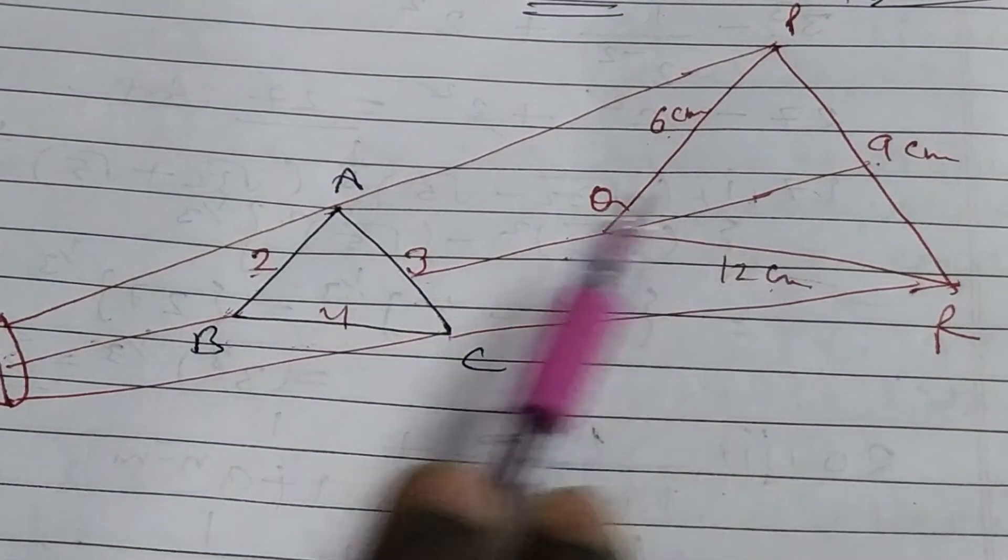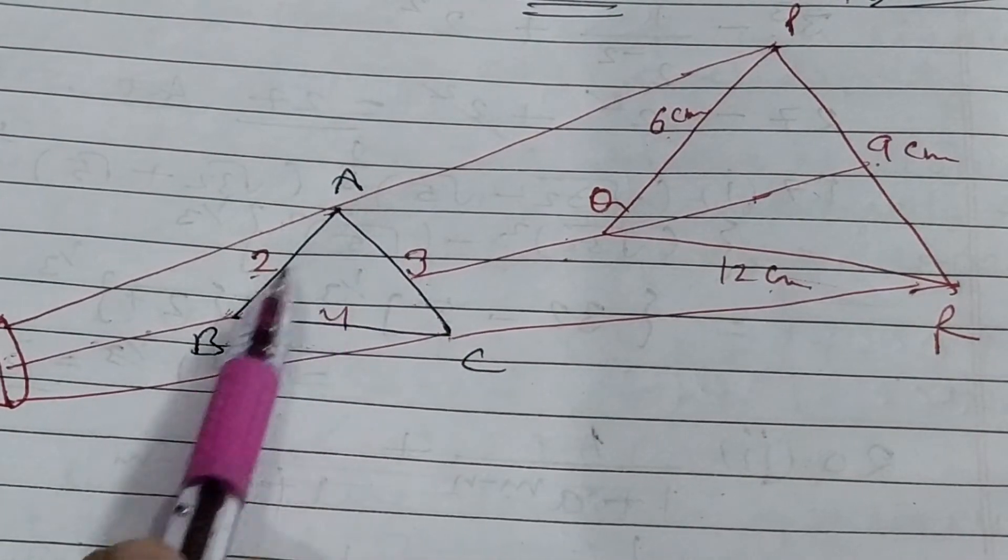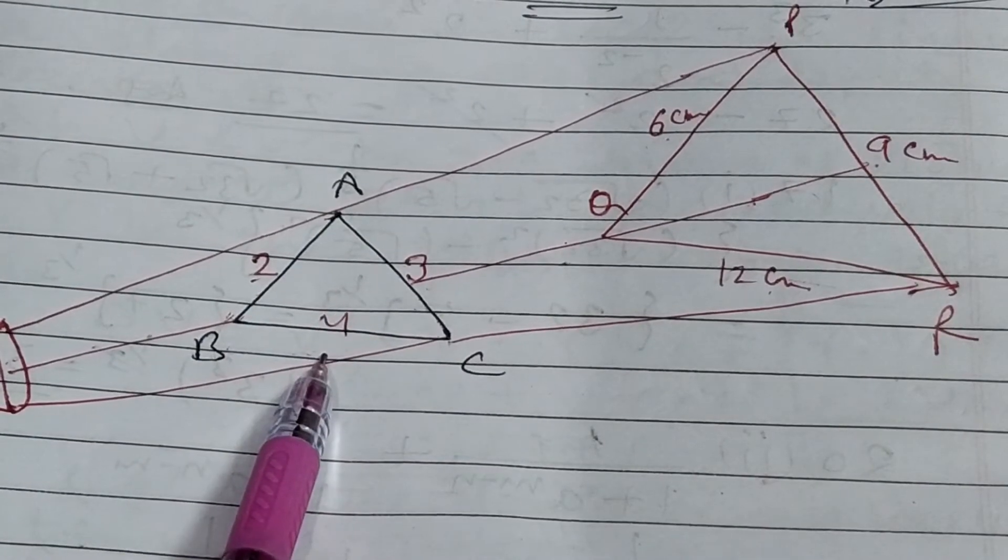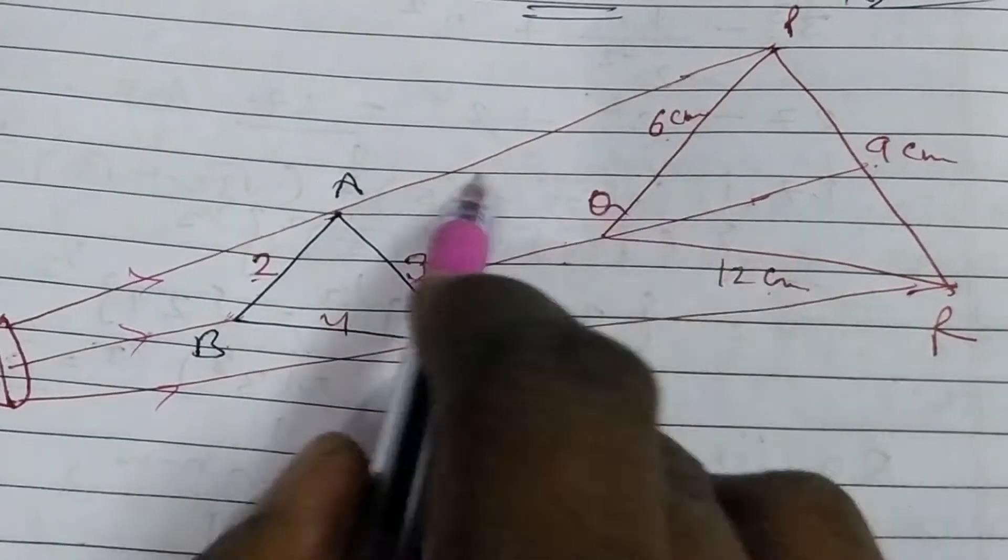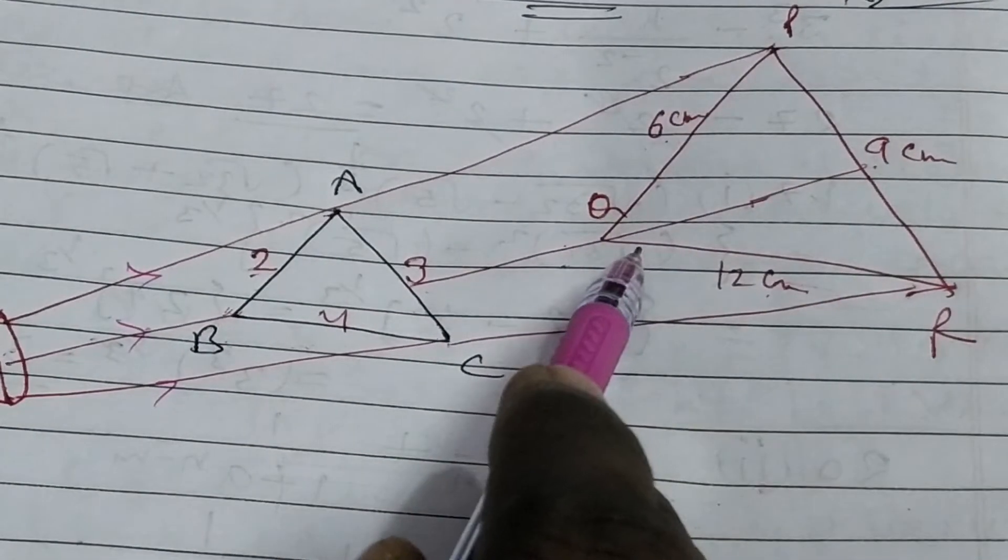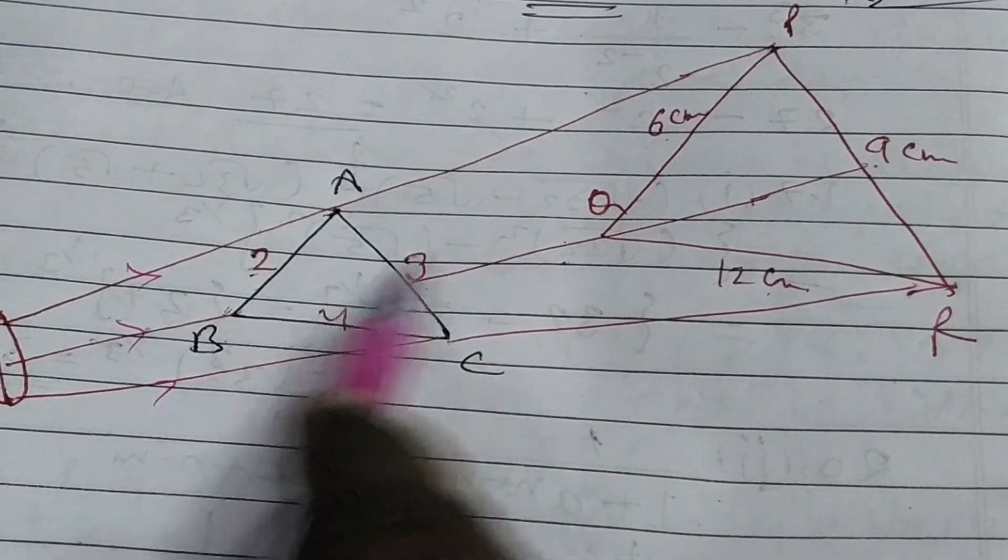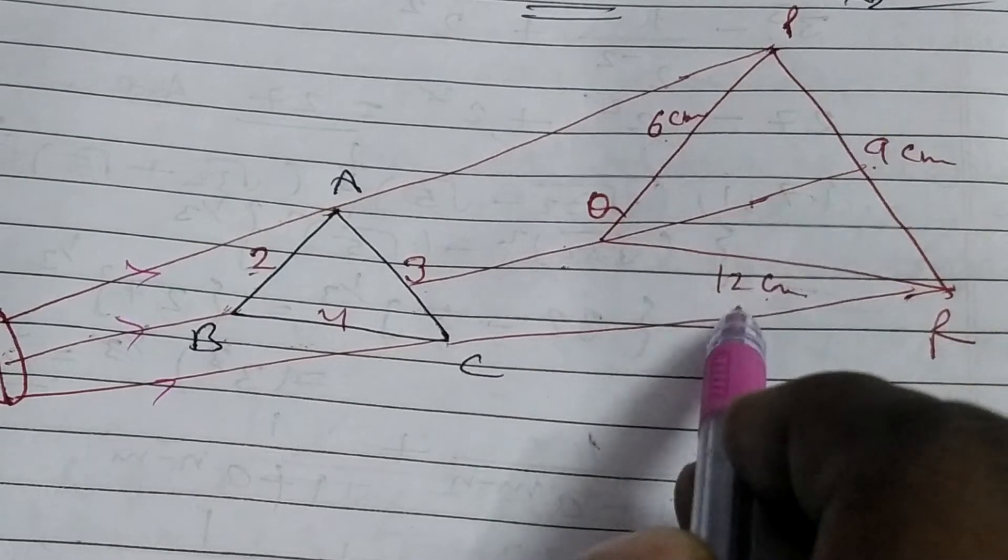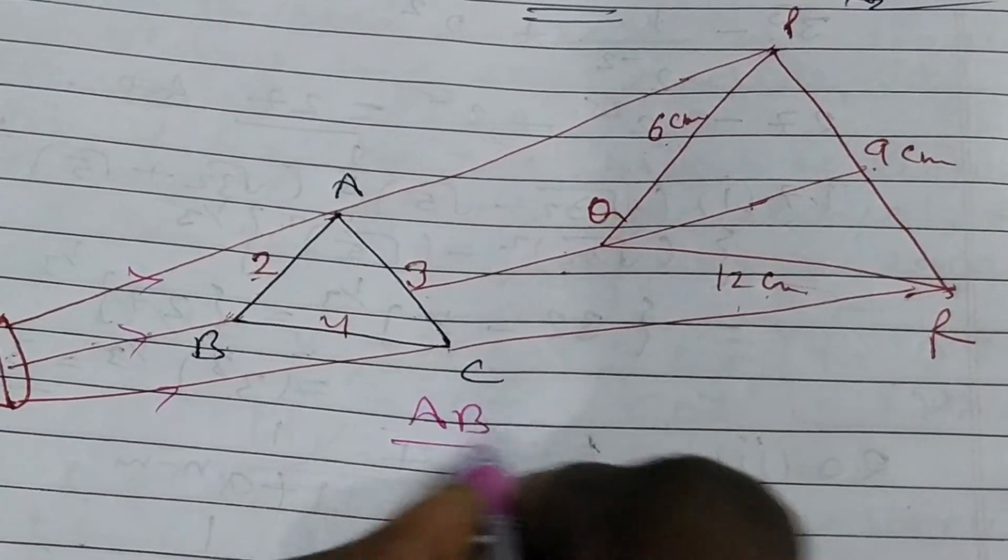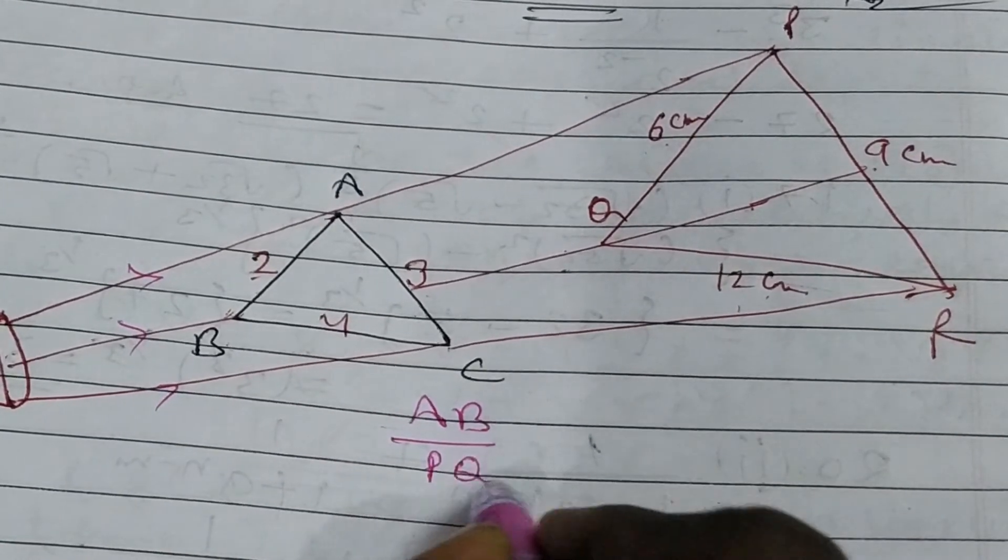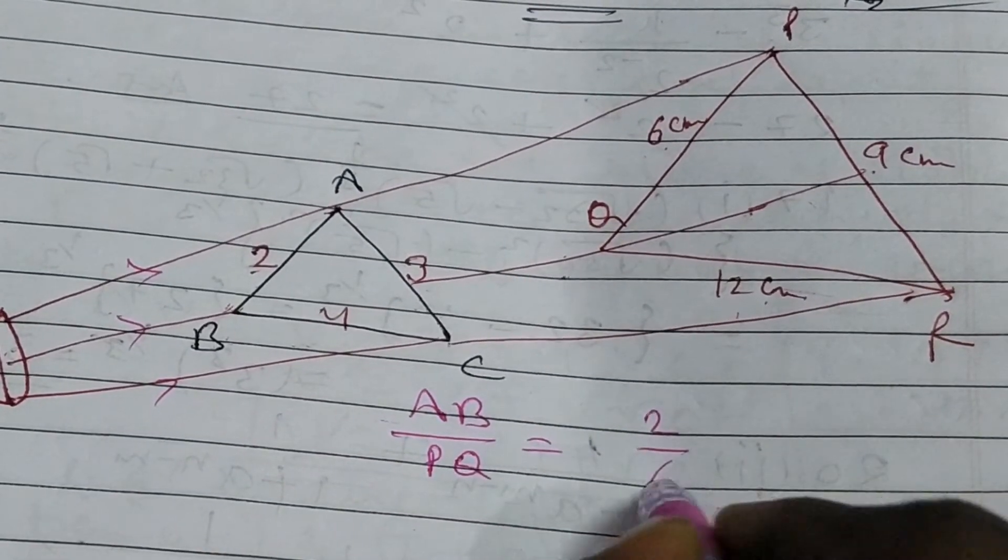I have taken here two triangles. In one triangle, suppose sides are 2, 3, 4 cm. And when you pass the light ray through this, a shadow is formed of this triangle. If it is of opaque medium, like 6, 9, 12 cm sides of this shadow. You can say that the ratio of AB and PQ is 2 upon 6 means 1 upon 3.